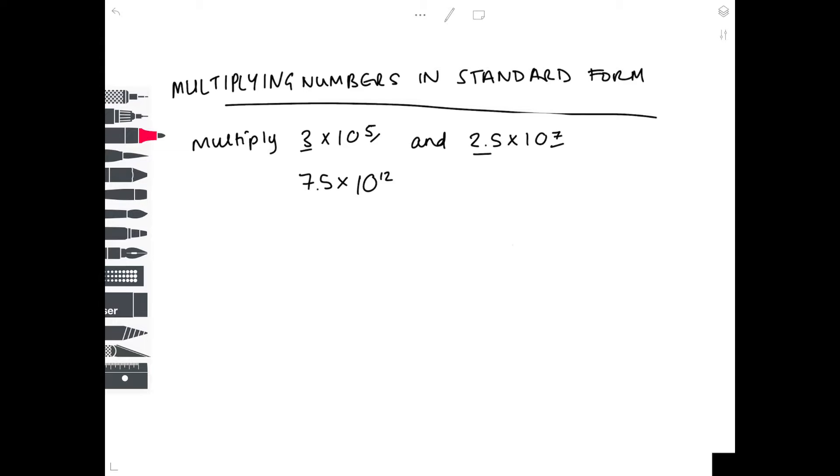Because that was so quick to do, we're going to take another example, which is multiply 1.2 times 10 to the 10, and 5 times 10 to the 7. Let's sort out the powers first of all, so we just add together those indices to become 10 to the 17.